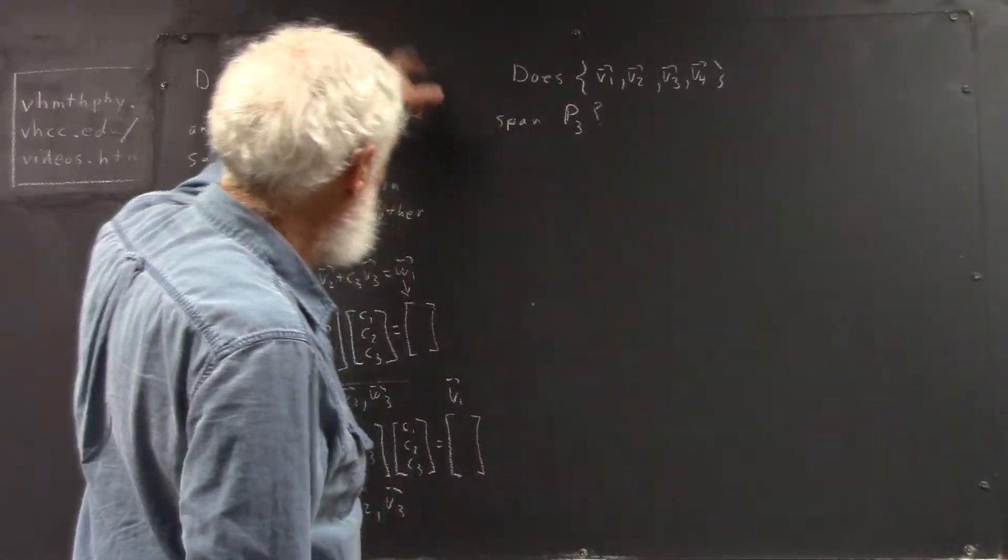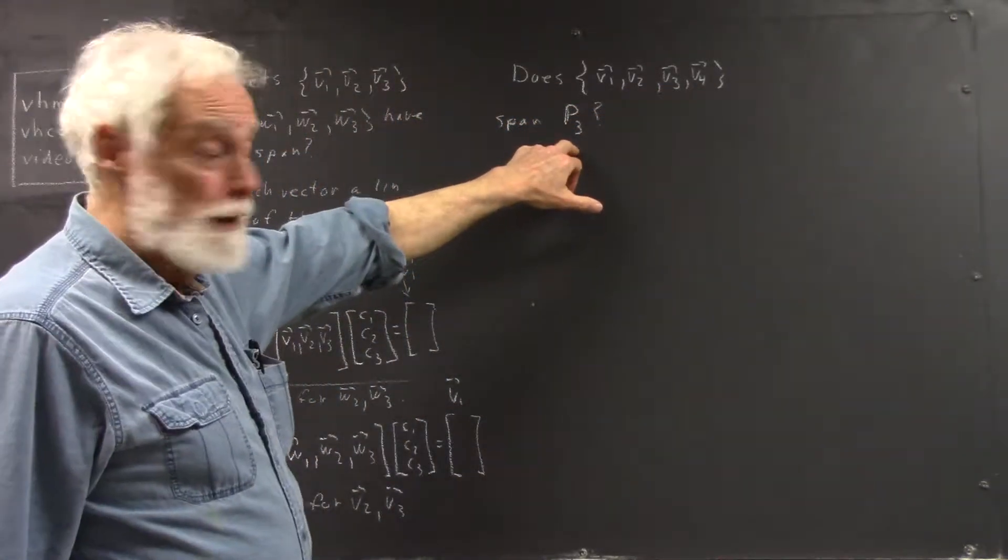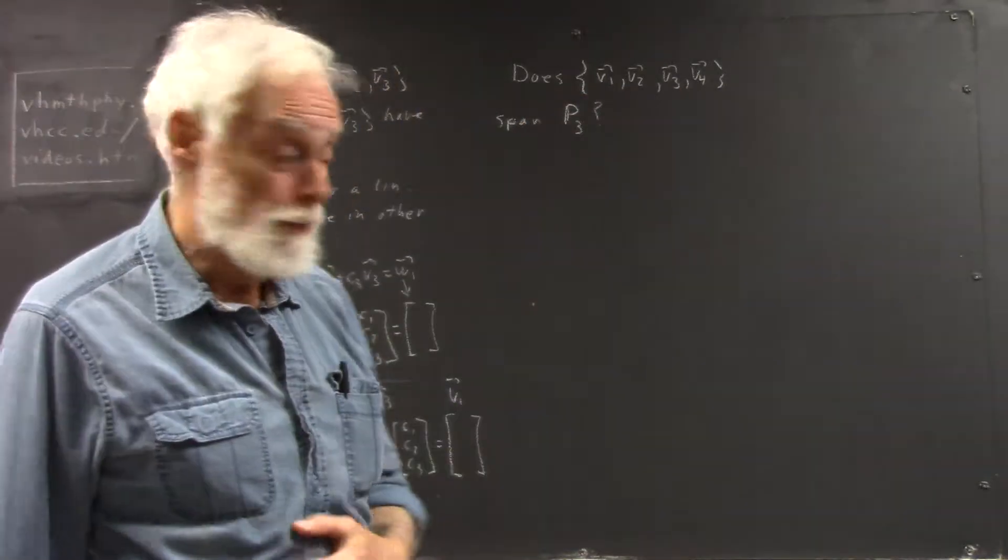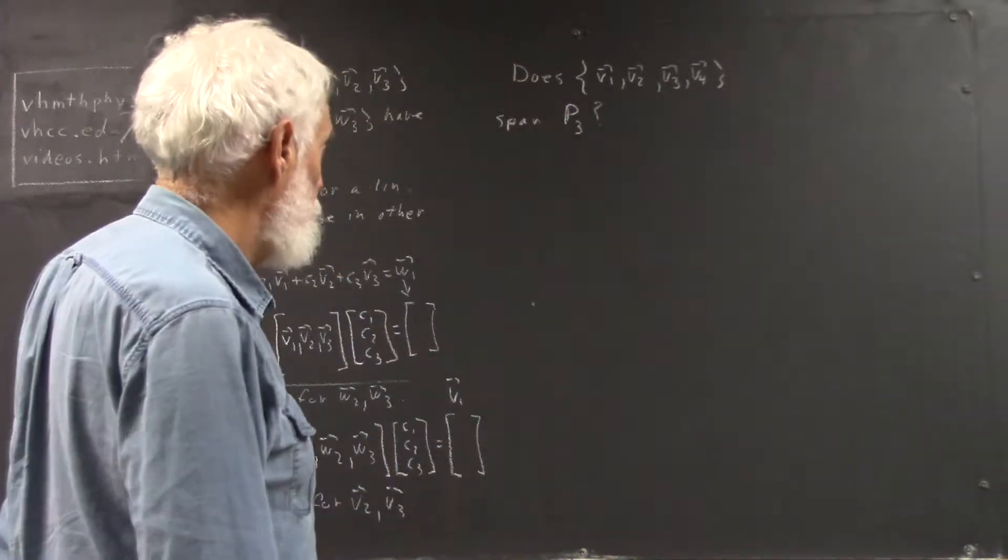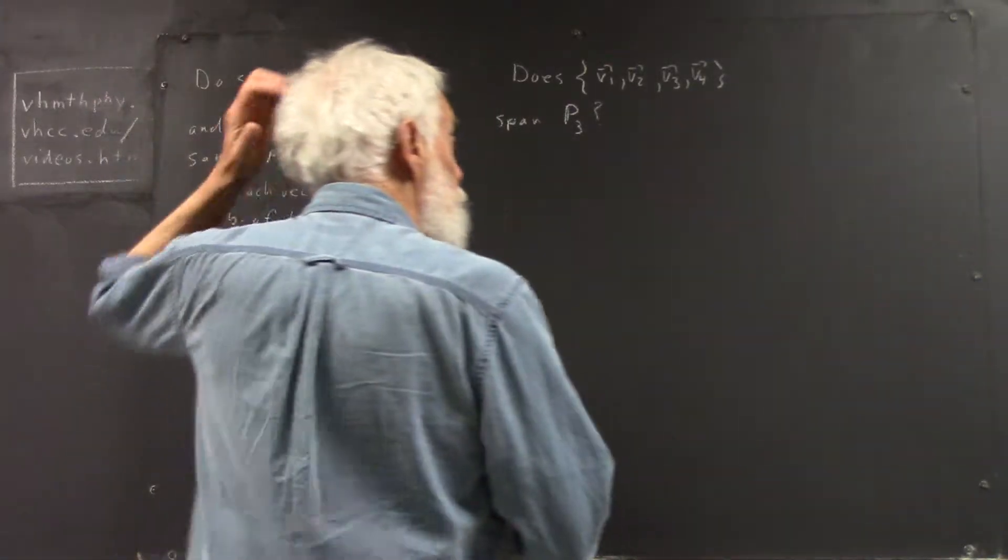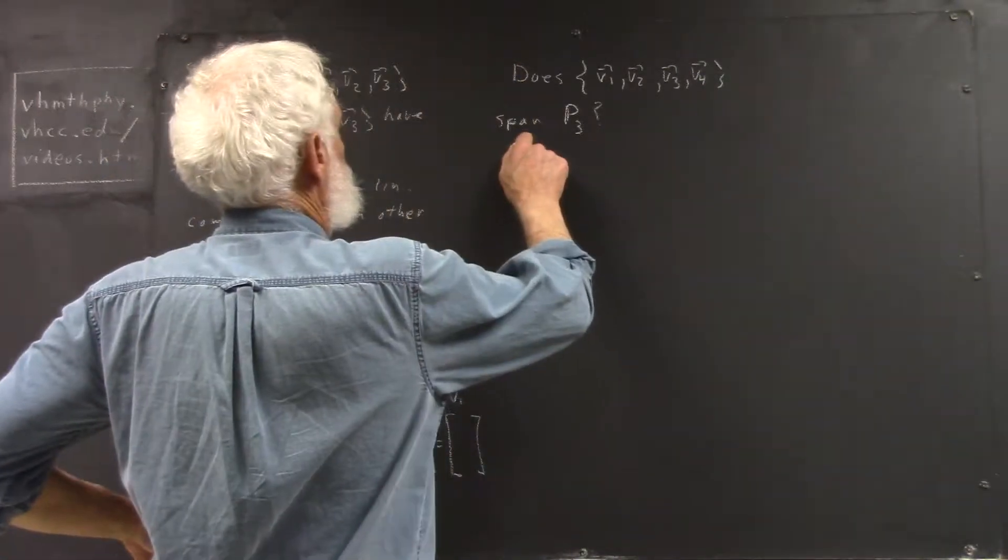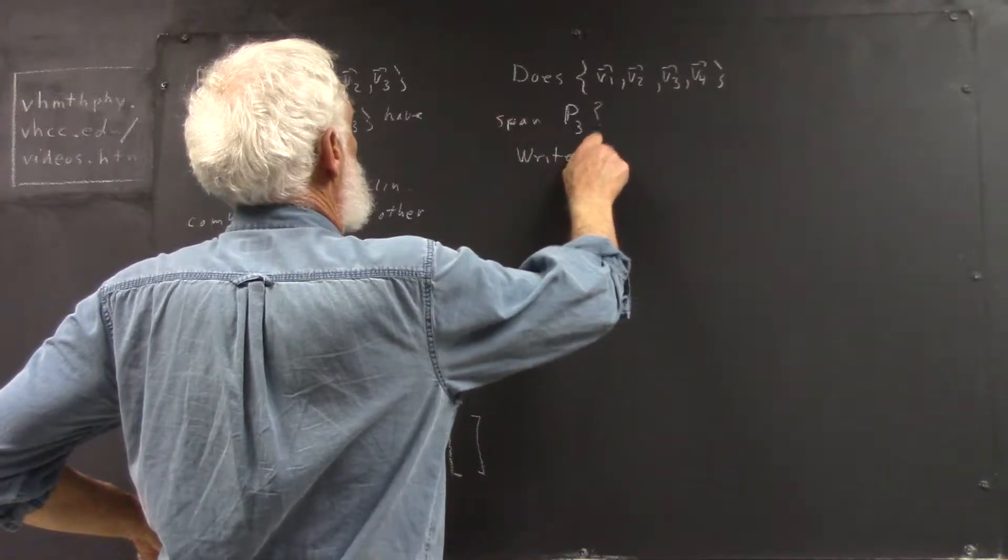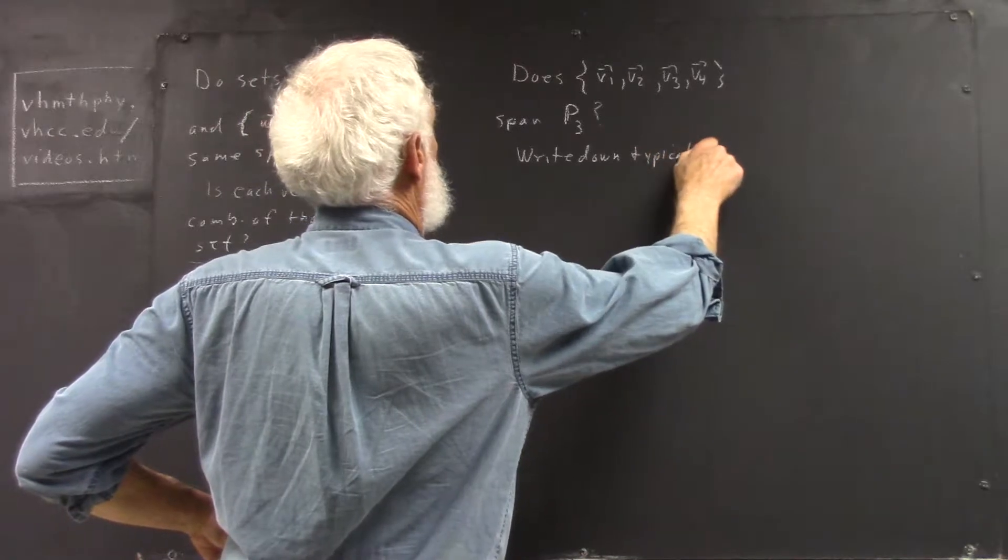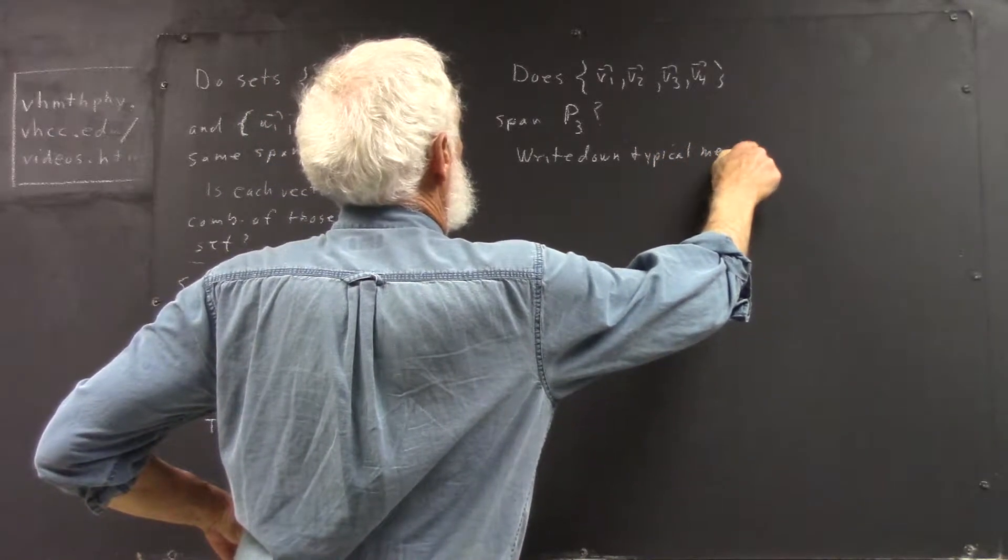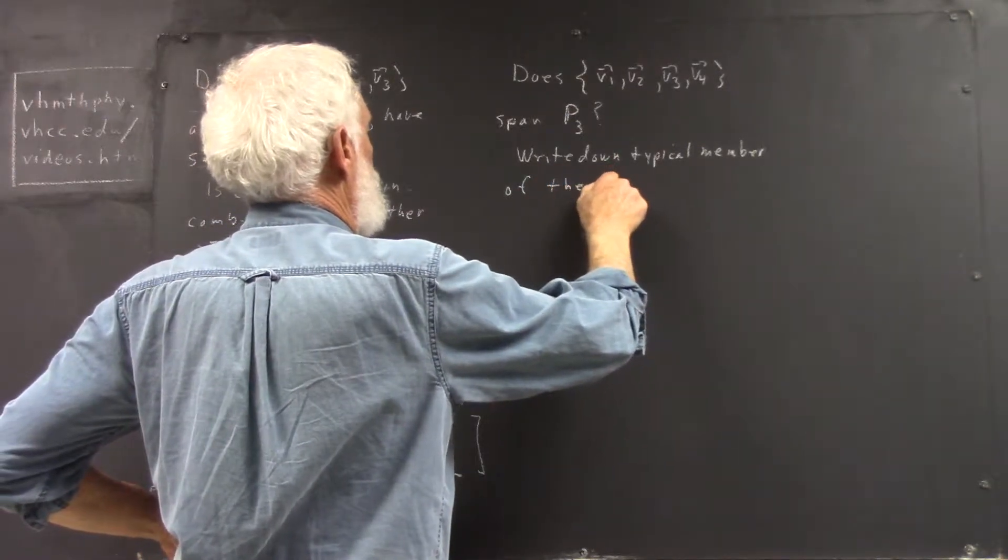We have the question here: does this set of four vectors span P3? Now, I haven't written out what the vectors are. They could be any four vectors in P3. So we have to determine whether they span P3. Now, to answer such a question, first of all, write down the typical element or the typical member of the space.